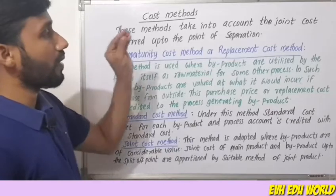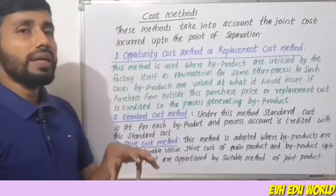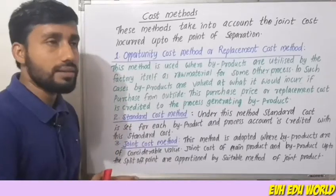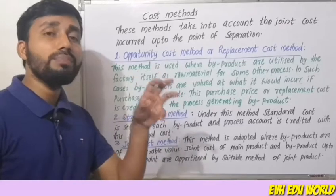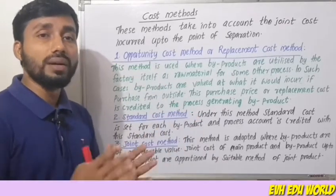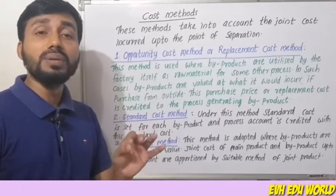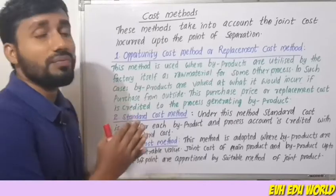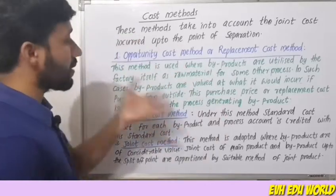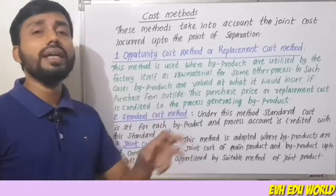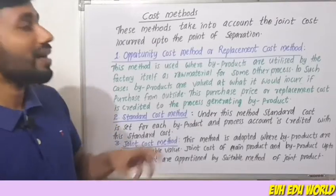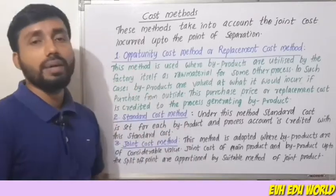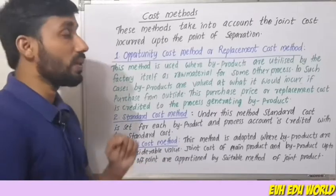The next method under cost method is the replacement cost method, where byproducts are utilized by the factory itself as raw materials for some other process. Byproducts are used as raw material in another process. In such cases, byproducts are valued at what it would cost if purchased from outside, and that purchase price is credited to the process generating the byproducts.